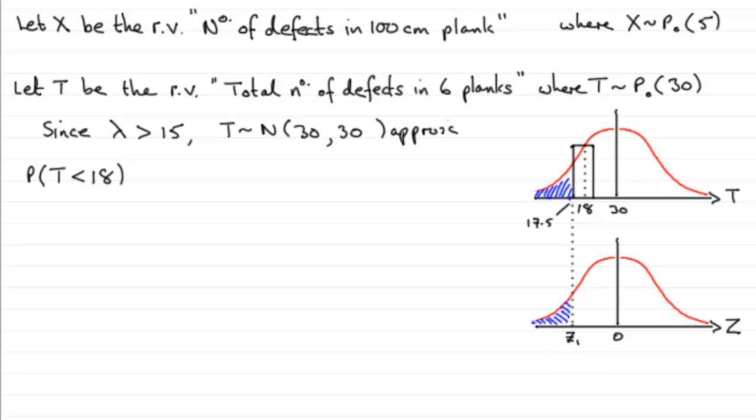What is the value of z₁? In the usual way we should know that to get the value of z₁: z₁ equals the observed value which is 17.5 minus the mean which is 30, divided by the standard deviation. And standard deviation is going to be the square root of the variance, which was 30. If you work this out, it comes out to be minus 2.2821 and so on.